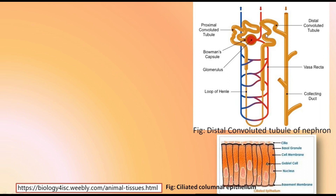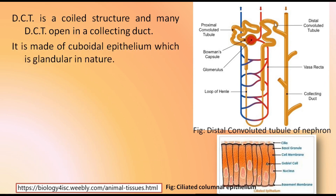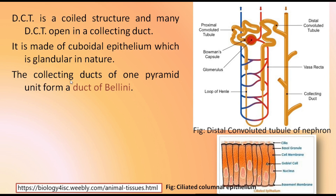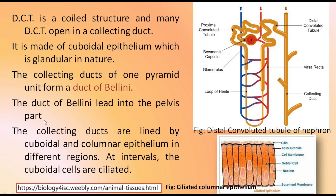The distal convoluted tubule is a coiled structure, and many distal convoluted tubules open into the collecting duct. The distal convoluted tubule is made up of cuboidal epithelium which is glandular in nature, and the collecting ducts of one pyramid unit form a duct of Bellini. The duct of Bellini leads into the pelvis. The collecting ducts are lined by cuboidal and columnar epithelium in different regions. At intervals, the cuboidal cells may be ciliated.